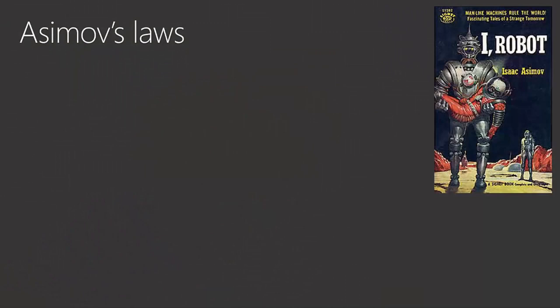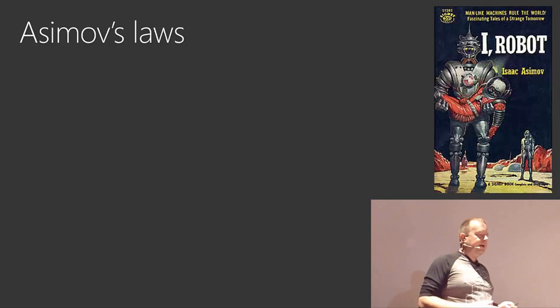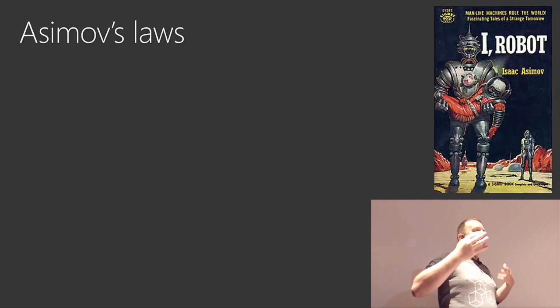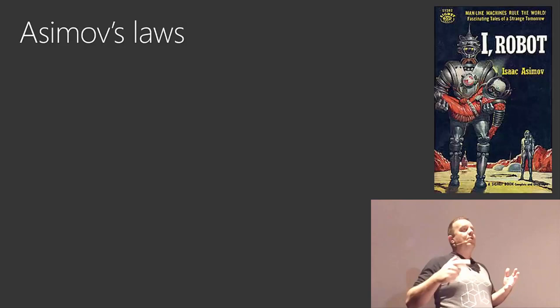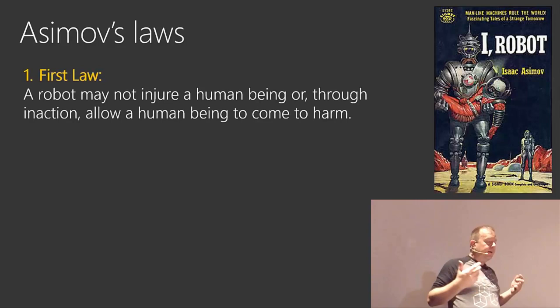So when I was younger, I read iRobot, which probably a lot of you did because Asimov is a great writer. Asimov came up with some ideas which already back then were kind of bothering humanity, or at least should have. Like, what's going to happen when robots take over the world? And the first law was: a robot may not injure a human. That's the most important law.